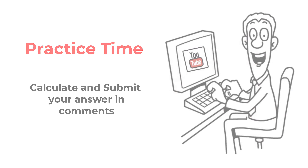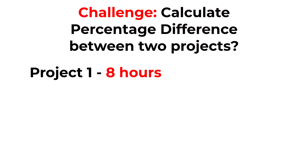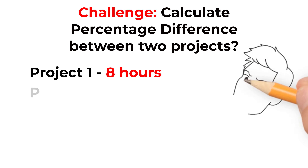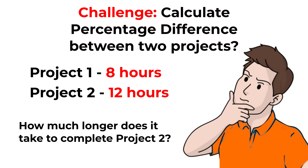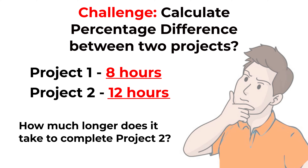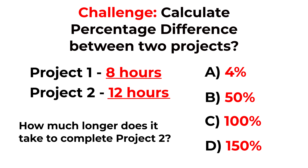Now here's a practice question: we have two projects — Project 1 takes 8 hours to complete and Project 2 takes 12 hours. How much longer in percentage does it take to complete Project 1 versus Project 2? Choices are: A) 4%, B) 50%, C) 100%, D) 150%. Post your calculated answer in the comments so I can give you the grade. Thanks for participating and good luck.